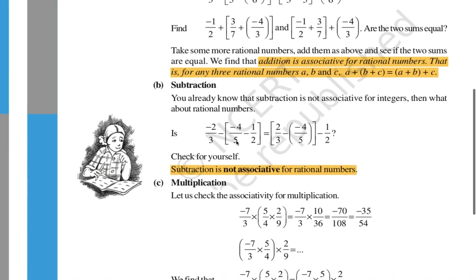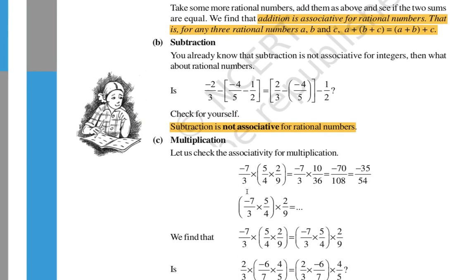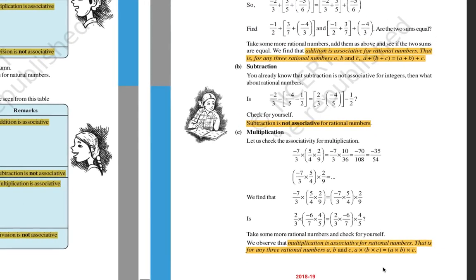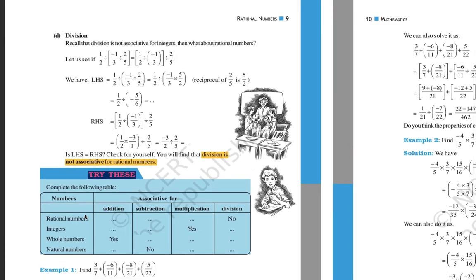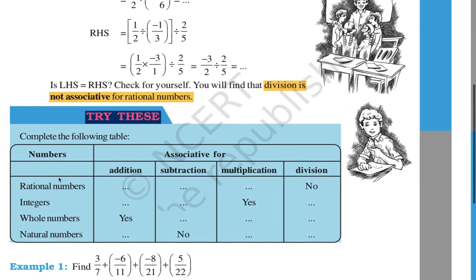For subtraction, you will not get the same result when grouping changes — so subtraction is not associative for rational numbers. For multiplication: if you have three rational numbers a, b, c, and you first consider b and c and multiply with a, then first consider a and b and multiply with c, you get the same result — so multiplication is associative for rational numbers. Division is not associative for rational numbers, because if you change the grouping the result will not be the same.